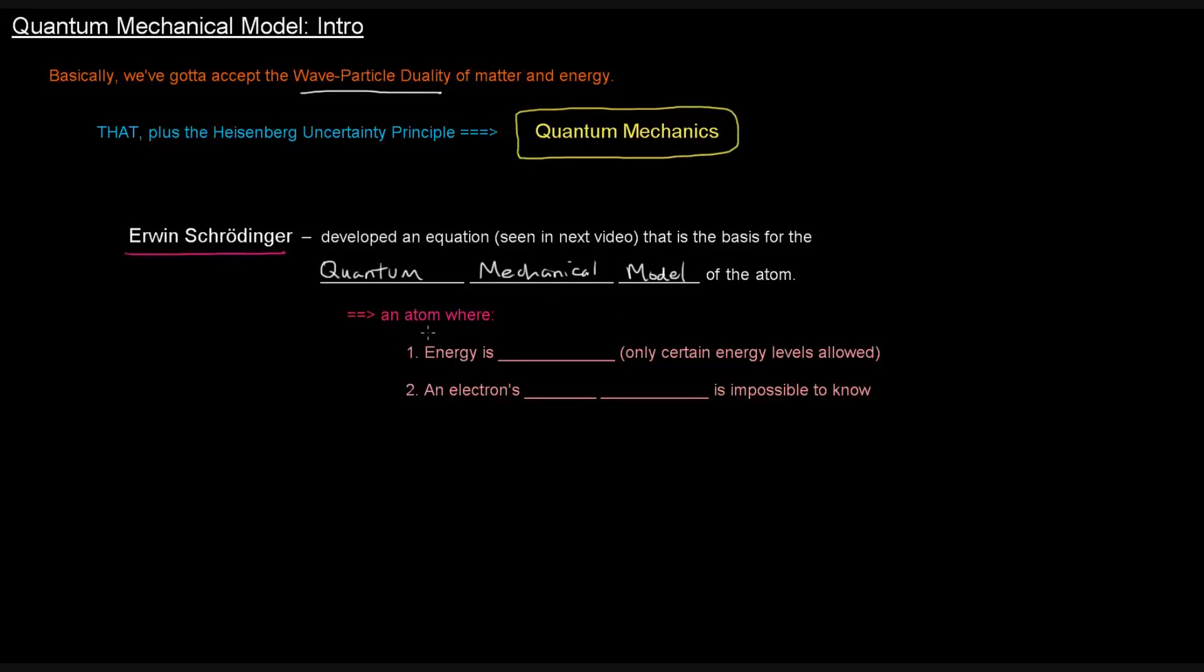In the quantum mechanical model of the atom, energy is quantized, which means that only certain energy levels are allowed, and an electron's exact location is impossible to know. That's where the Heisenberg Uncertainty Principle comes in.